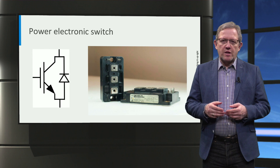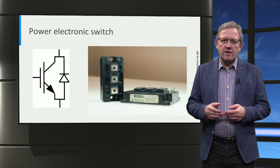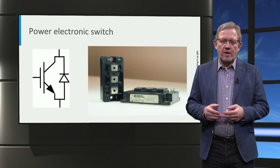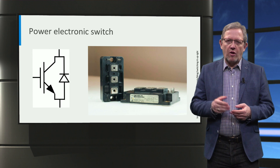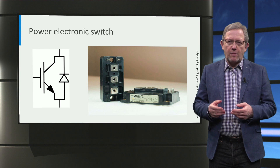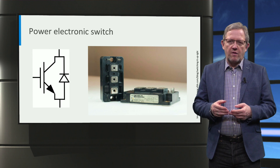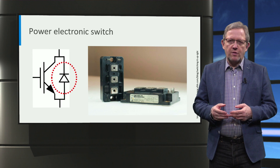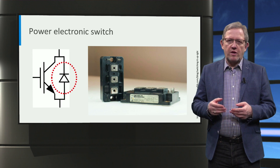These power electronic switches are able to turn on and turn off at high switching frequencies ranging from hundreds of hertz up to hundreds of kilohertz — in other words, they are able to turn on and turn off within half a microsecond. The new silicon carbide or gallium nitride based switches turn on and turn off even faster, within tens of nanoseconds. In this particular IGBT switch, an antiparallel diode is included that allows reverse currents.